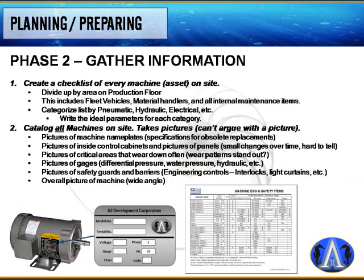Phase two is to gather information. The manufacturer's ID tag is the best starting point. Create a checklist for every machine and asset on site, dividing up areas on the production floor. This includes fleet vehicles, material handlers, and all internal maintenance items, categorized by pneumatic, hydraulic, electrical, etc.